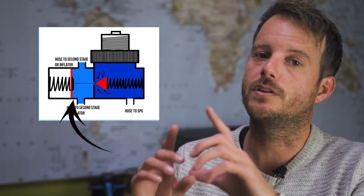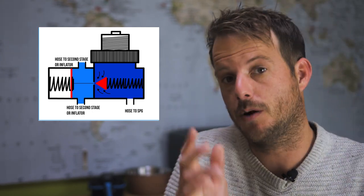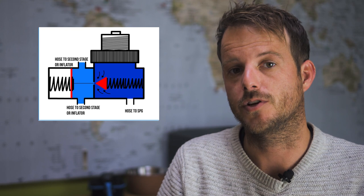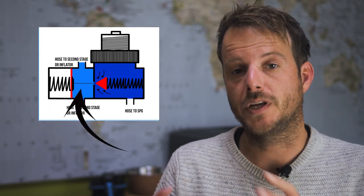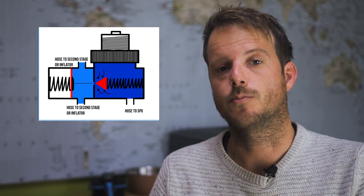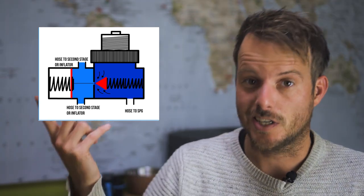You got an ambient pressure chamber which is white and you got the mid pressure chamber which is light blue. You can see those chambers are just the other way around as was with a piston first stage.